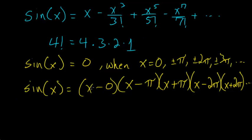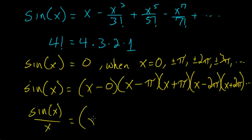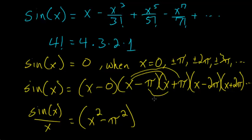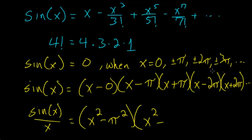We can clean this up a bit. Dividing each side by x gives sine(x)/x = (x − π)(x + π) · … Using the FOIL method, (x − π)(x + π) simplifies to x² − π², since the middle terms cancel and −π · π = −π². The next pair gives x² − 4π².